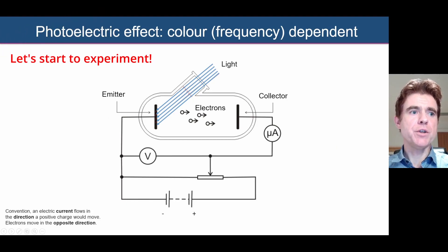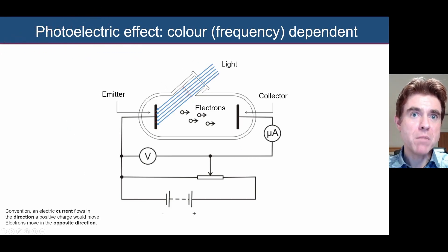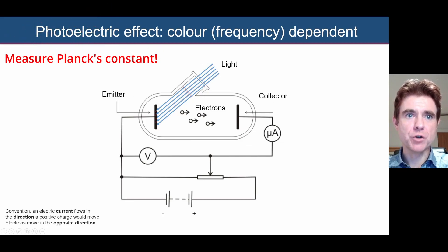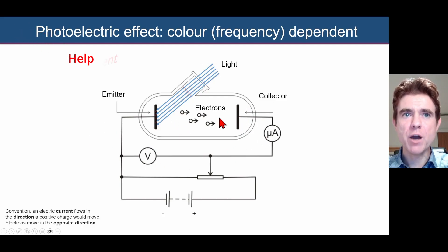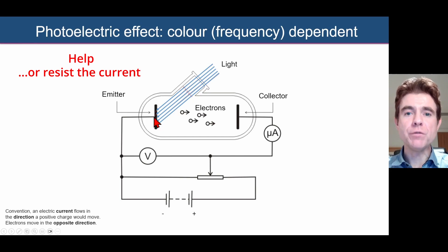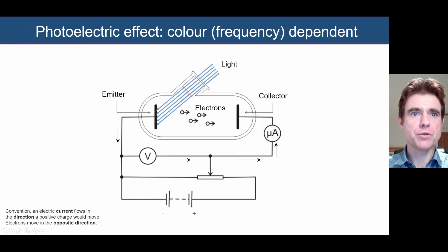Let's look in more detail at what we can do to investigate the photoelectric effect — and remarkably, this can even allow us to measure Planck's constant. We can apply a potential difference across this system to either help or resist the current flow, even to the point of stopping the photoelectric effect entirely, which gives us a lot of insight into the material.